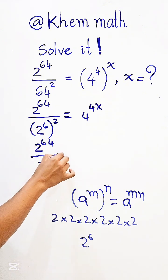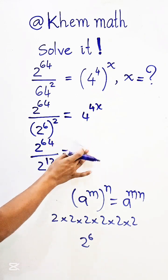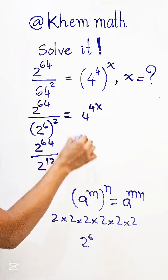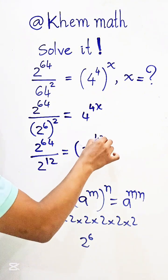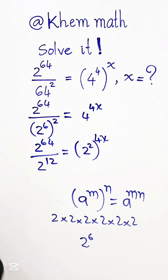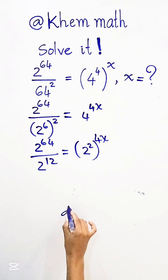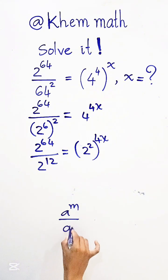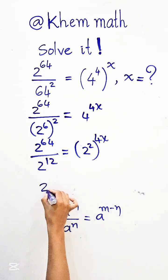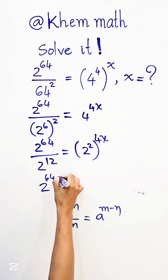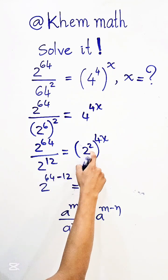On the right side, 4 can be written as 2 squared, so 4 to the power 4 times 8 equals 2 squared to the power 4 times 8. We use the formula: a to the power m divided by a to the power n equals a to the power m minus n. So the left side gives us 2 to the power 64 minus 12.